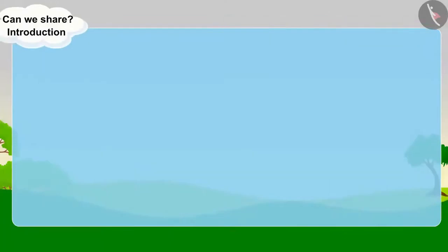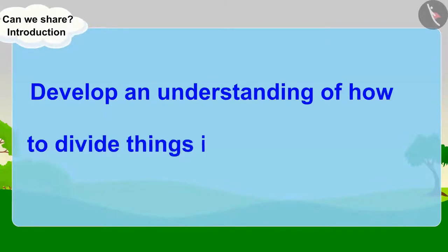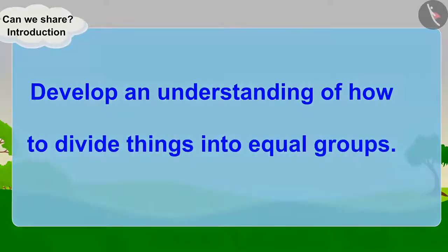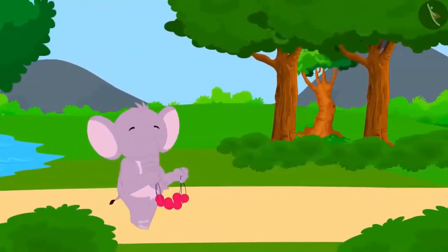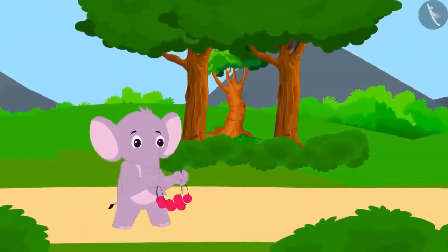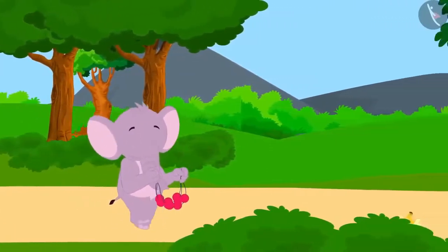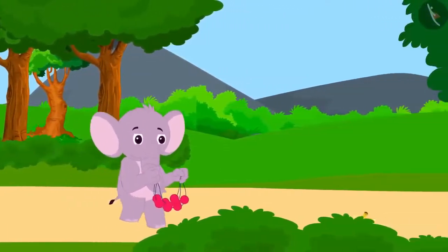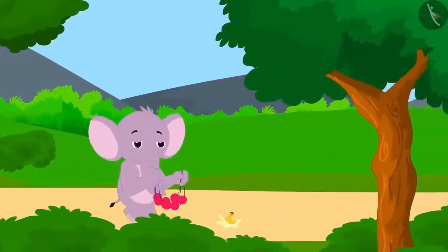In this lesson, we will develop an understanding of how to divide things into equal groups. Appu the elephant is bringing three necklaces for Shere Khan as a birthday gift.